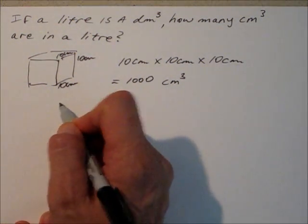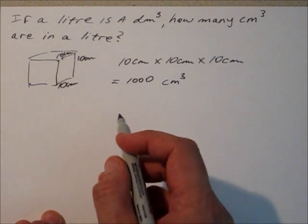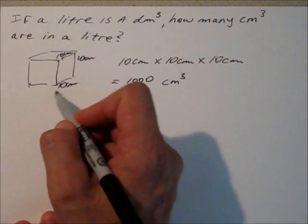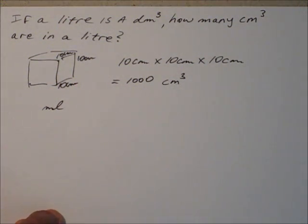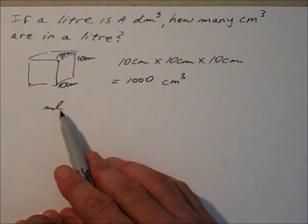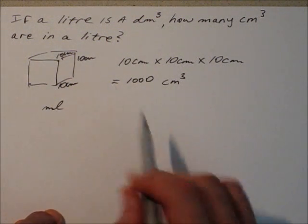But just for your own interest, you might also recall that there's another way in which we measure fairly small volumes, and that's to talk about milliliters, or mils, which are a thousandth of a litre. And clearly, there must be one thousand mils in a litre.